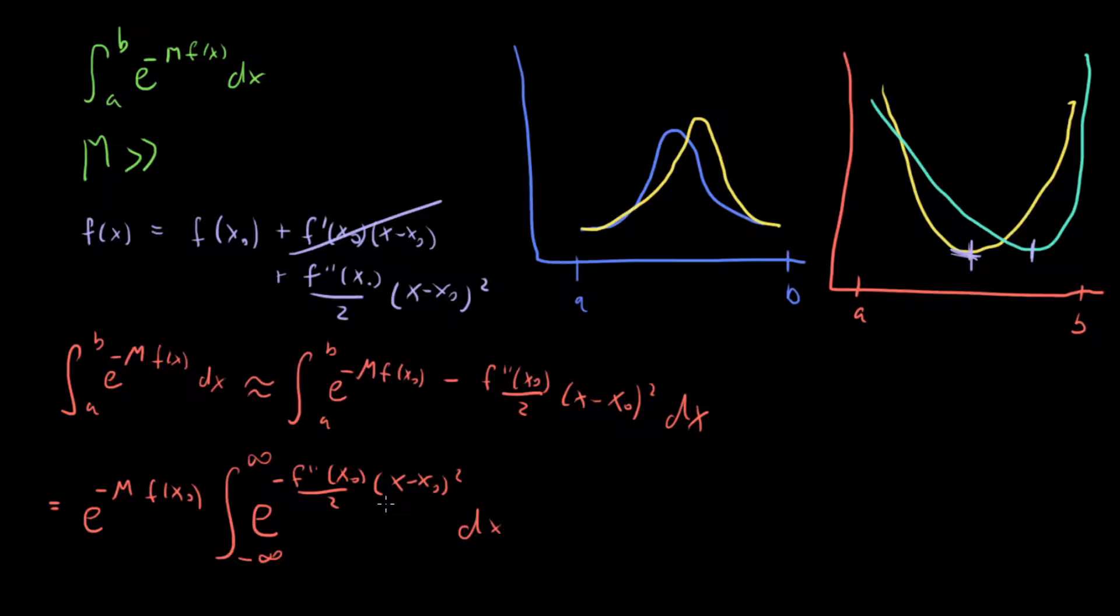And this is the Gaussian integral that we know how to perform. And if we do this, then what we get is our first term out in front, and then from our Gaussian integral we get square root of 2π/(m*f''(x₀)). This is something that we can for sure calculate given this initial problem.